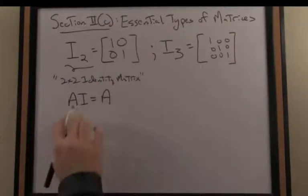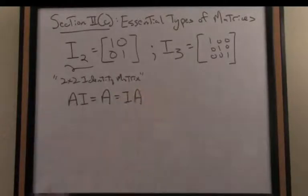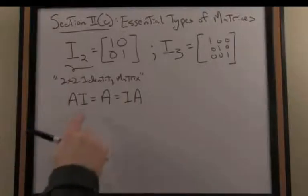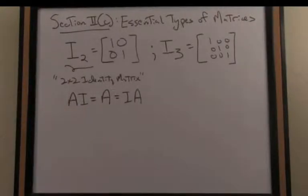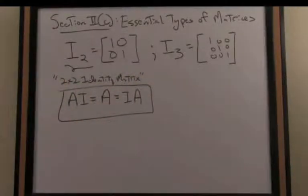Also a nice algebraic property of identity is the order in which I multiply a matrix by the identity doesn't matter. So the identity matrix, we would say, commutes with any matrix A, and it produces that matrix itself. So it acts as an identity element.